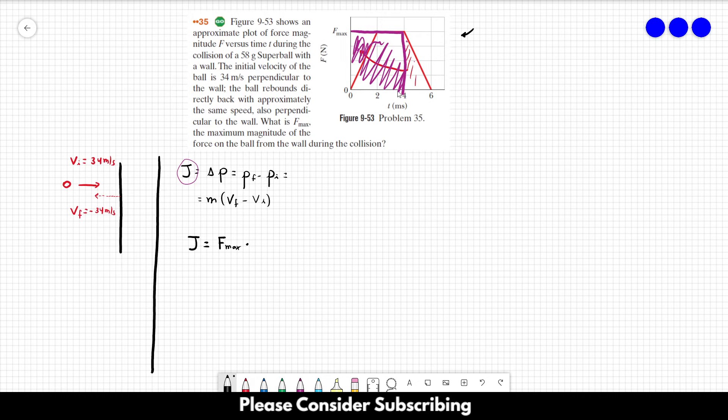That's almost over because I already know all these values. So F_max times 4 times 10 to the minus three is equal to the mass of the ball, which is 58 times 10 to the minus three.